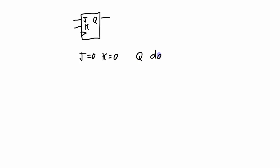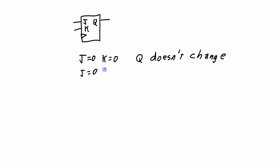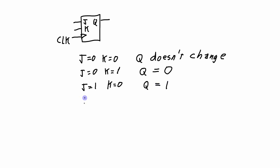As a sidebar, let's refresh ourselves on the operation of a JK flip-flop. If J=0 and K=0 then Q doesn't change. If J=0 and K=1, Q will be set to 0. Remember all these changes only occur on the clock edge. If J=1 and K=0, then Q will change to 1. And finally, if J=1 and K=1, then Q will toggle — if it's a 0 it will become a 1, and if it's a 1 it will become a 0.